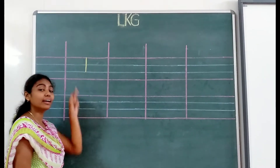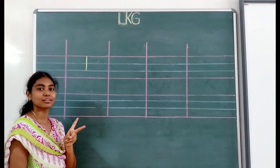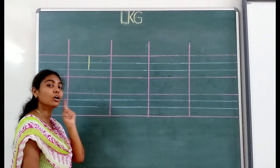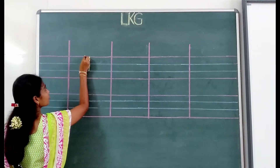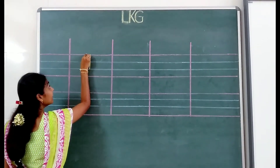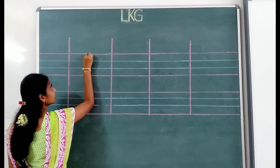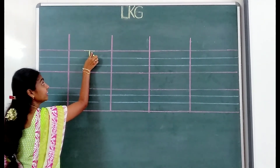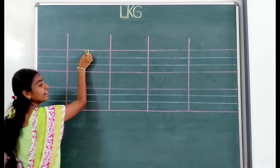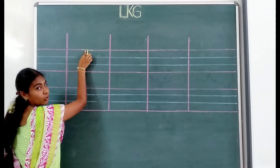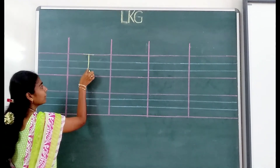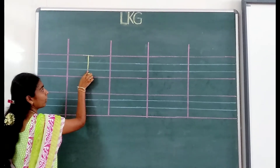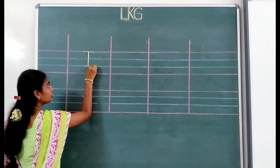In capital I, there are two sleeping lines. How many sleeping lines? Two sleeping lines. One sleeping line you have to write from left to right — a left-to-right sleeping line on the red line. Then the next sleeping line, you have to write on the last blue line from left to right.